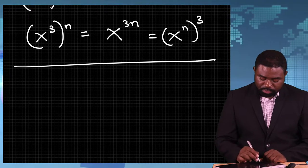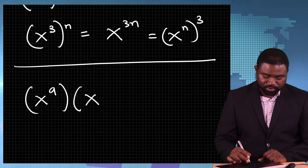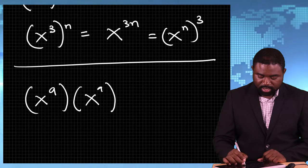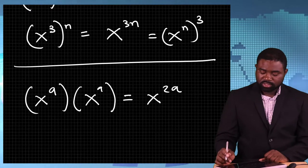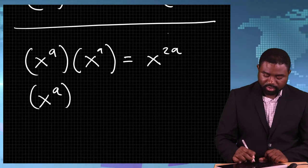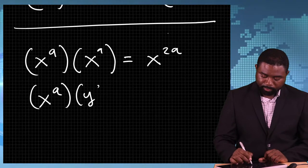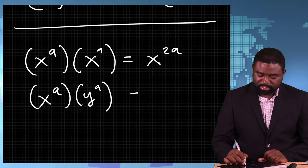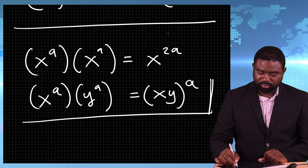Suppose we have x raised to the power a, multiplied by x raised to the power a — this will just be equal to x raised to the power 2a, because we just add the two exponents. But what if we have x raised to the power a, multiplied by y raised to the power a? Even though the bases are different and the exponents are the same, this is the same as xy, all raised to the power a. This is really important.